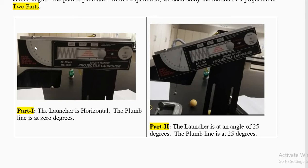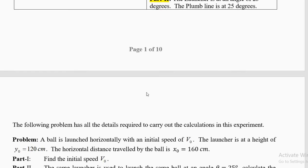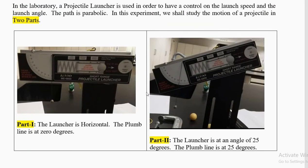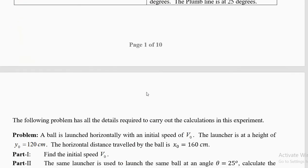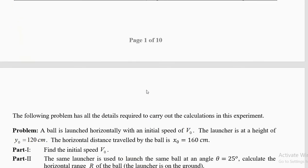The launch angle can be adjusted very accurately using a plumb line and a hanging mass, which will act as a plumb line. It is straightforward to do this experiment. Now before we do the experiment we shall do one numerical problem in order to understand the calculations needed for this experiment.